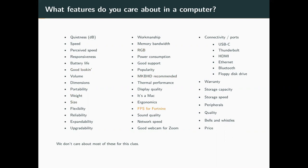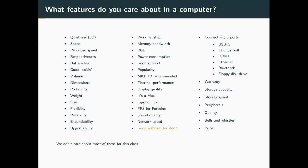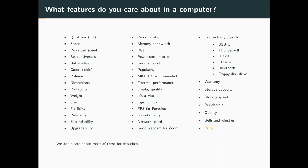Obviously, the most important metric that we care about is FPS for Fortnite, if you're 12. Good webcam for Zoom — this is actually a real concern now. USB-C, all sorts of stuff, price. There's plenty of things that consumers tend to think about as far as what they want on a computer. But honestly, we don't care about most of these in this class. We do care about some of these things — mainly stuff like speed, and maybe price.